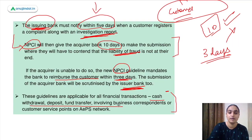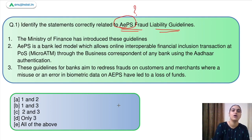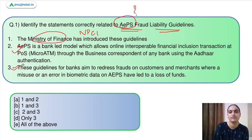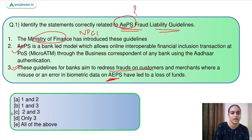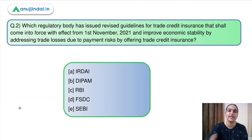Coming back to the answer for question 1: we have to identify the correctly related statements. The first statement — that the Ministry of Finance issued these guidelines — is incorrect; it was NPCI. The second statement, which defines AEPS, is correct. The third statement, which says the guidelines are meant to redress fraud on customers due to misuse of data on the AEPS platform, is also correct. So the answer is option C.